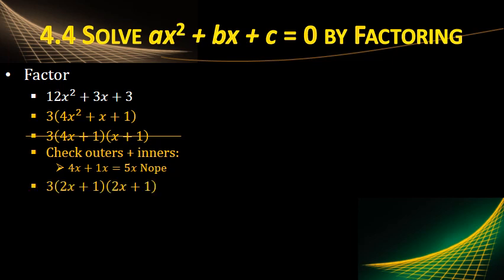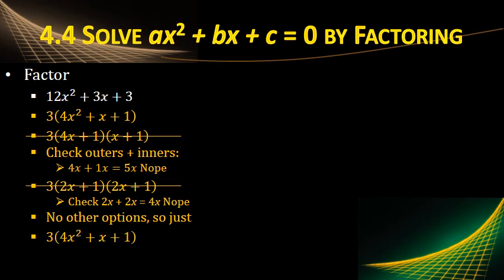Let's try something else. To get 4x squared, maybe we could do 2x times 2x. And the 1 is still just 1 times 1. Check. The outers are 2x times 1 and 2x times 1, which gives us 4x, which is still not the x we're looking for. There's no other options. The only way to get 4 is 4 times 1 or 2 times 2. The only way to get 1 is 1 times 1. So our answer is just that.